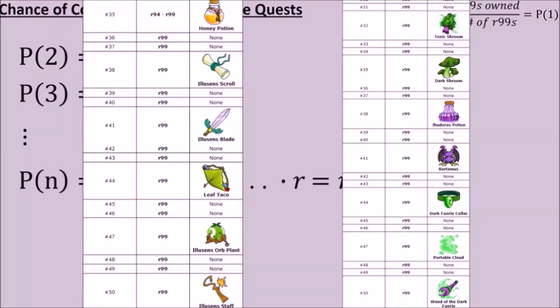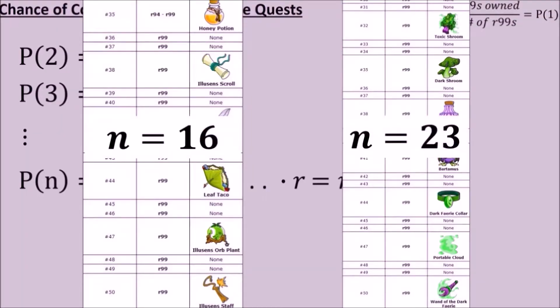We'll use r to calculate the chances of completing some number of quests in a row. For two quests in a row, we take the chance of completing the first quest times the chance of completing the second quest, and we get r squared. For three quests in a row, we multiply by r again to get r cubed. Following the pattern, we can see that our chances of completing n number of quests in a row is given by r to the n. For Illusion, we need to complete 16 quests in a row, and for Judora we need 23.